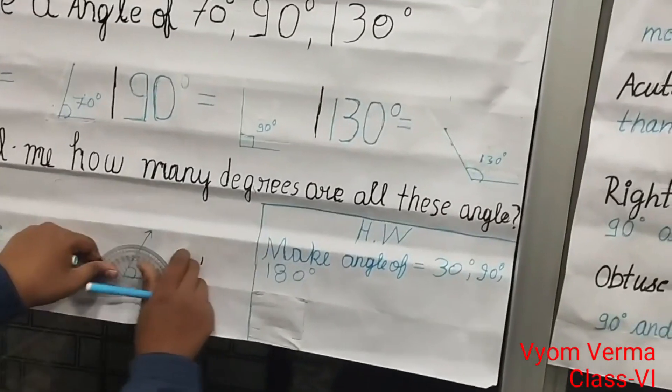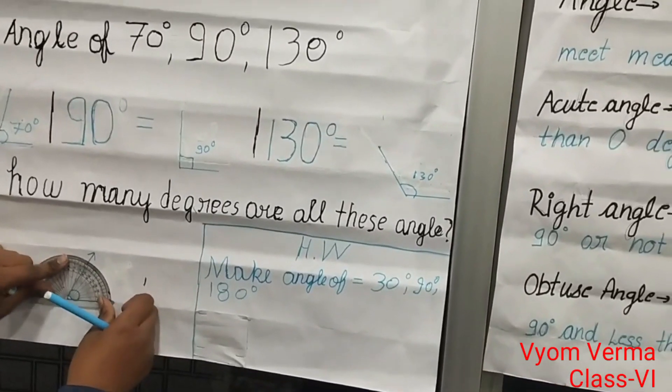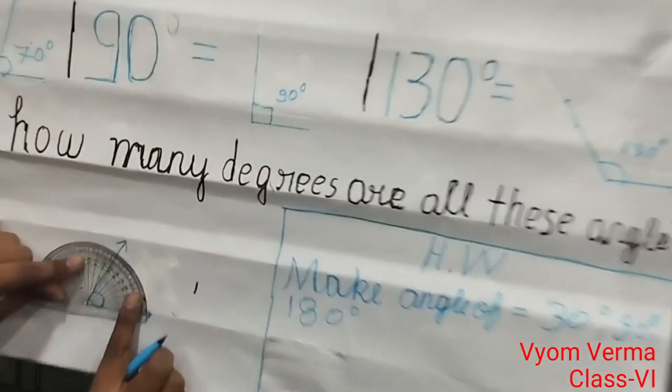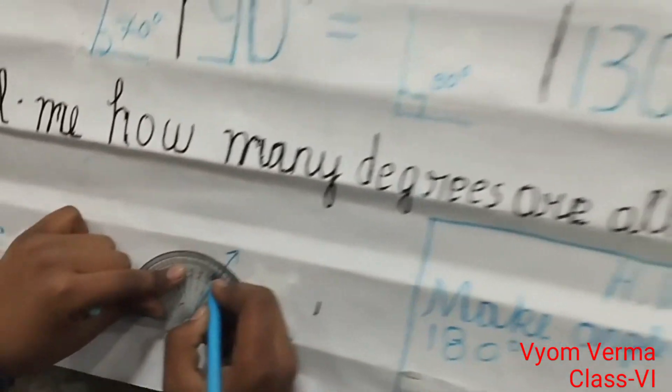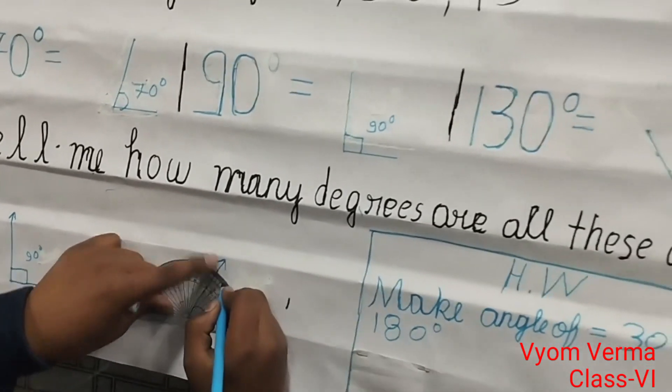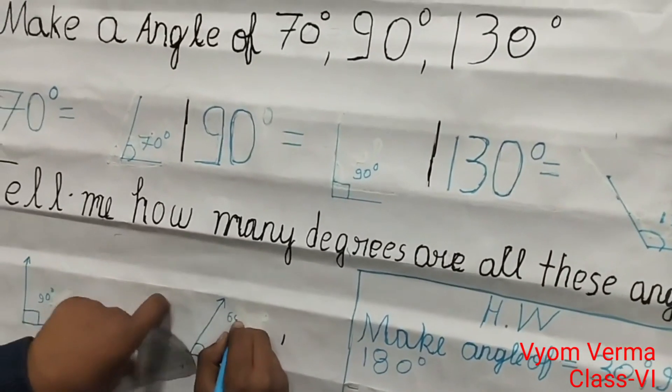Now the second one. Here you can see this, it is a 60-degree angle. So write 60 degrees.